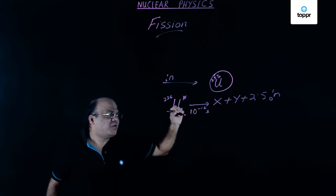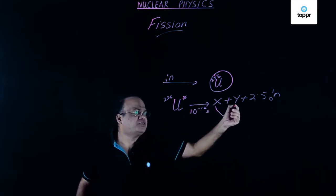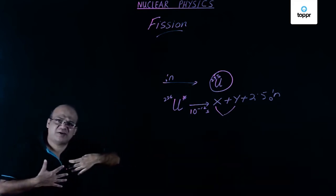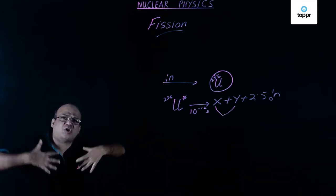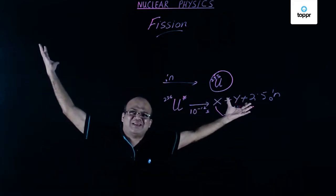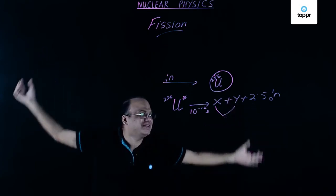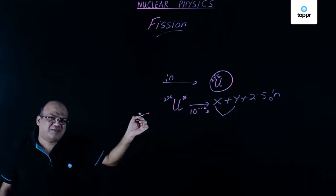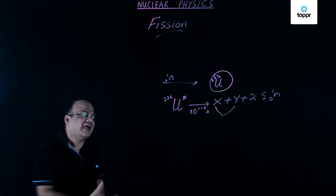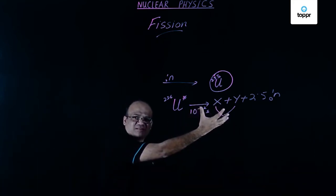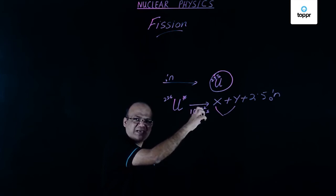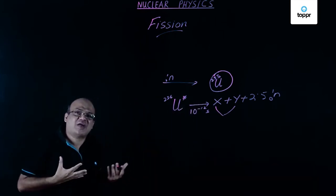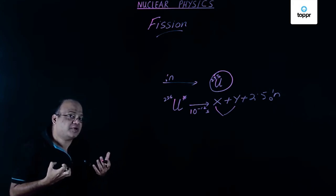These are called fission fragments. These fission fragments fly out with a lot of kinetic energy. Neutrons also pick up some energy. And these fission fragments are typically radioactive, so some energy goes as radioactivity of the fission fragments.